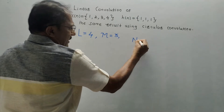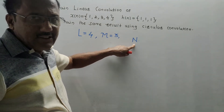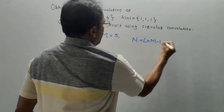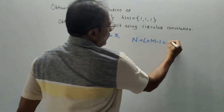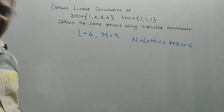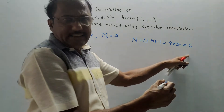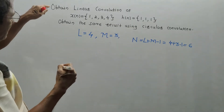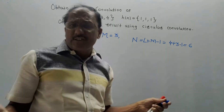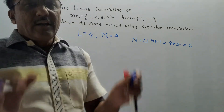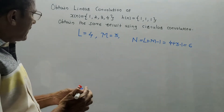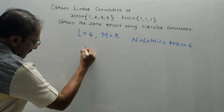The result of linear convolution contains N samples, where N = L + M - 1 = 4 + 3 - 1 = 6. That means performing linear convolution should give 6 samples in the answer. Let us first complete the linear convolution. There are different methods; let us use the simplest one — the tabular method of linear convolution.